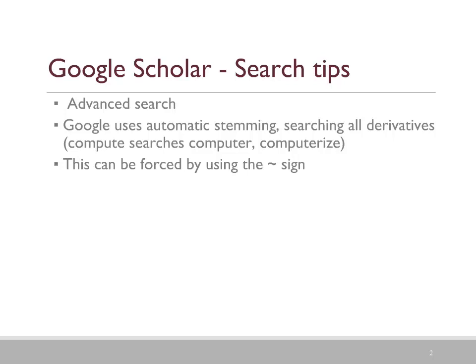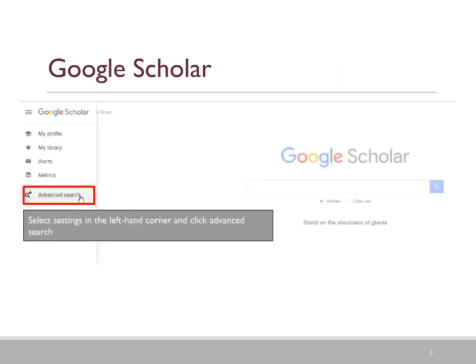However, if you are not sure and you want to be able to use stemming, then you can use that little sign that you can see on the slide. To get to Google Scholar Advanced Search, click on the little block that looks like three stripes and then click on Advanced Search.